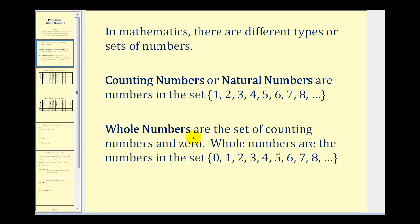Whole numbers are the set of counting numbers and zero. So whole numbers are the numbers in the set as we see here, and the only difference is whole numbers include zero, while counting numbers don't.